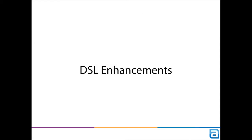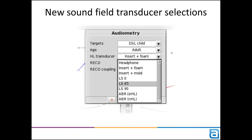Now, on to some DSL enhancements. There are a few, and they affect all AudioScan models. First off, we've added two additional HL transducer types. We've always had a setting for sound field labeled as loudspeaker 45, which assumes a 45 degree azimuth to the subject. We've now added the LS0 and LS90 as well.